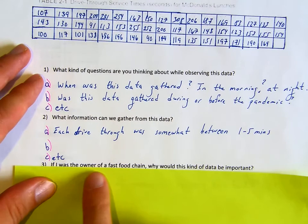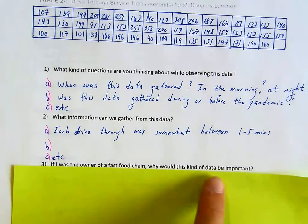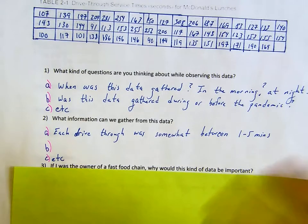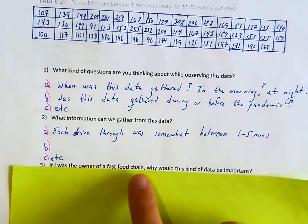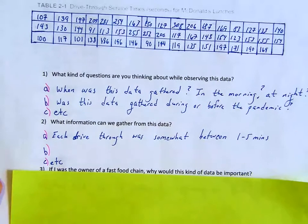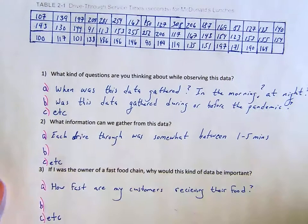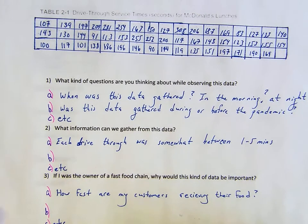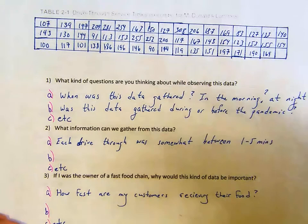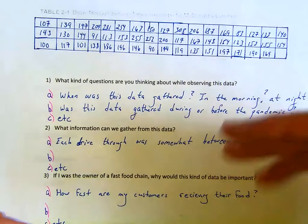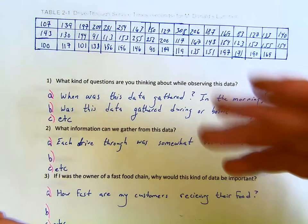For the third part: if you were the owner of a fast food chain, why would this kind of data be important? Pause the video and think about it. Why would this data matter to you? How fast are your customers receiving their food? Are they satisfied? How can we improve the quality of the drive-through? How can we generate more money?